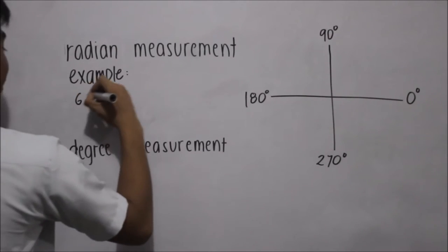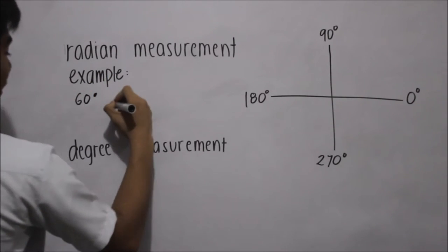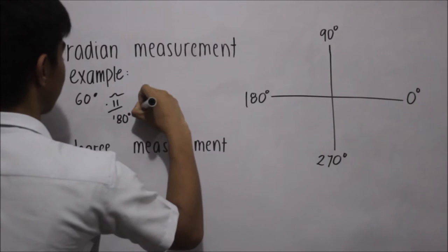60 degrees. 60 degrees times pi over 180 is equal to pi over 3.